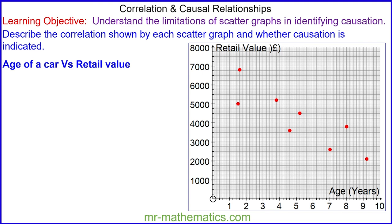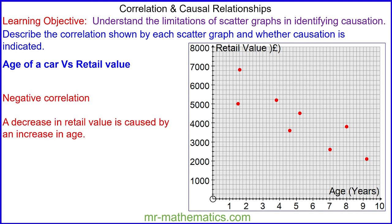And the final question. Can you describe the correlation shown by the scatter graph and explain whether causation is indicated? We have the age of car versus the retail value. Pause the video to answer the question and resume when you're ready. Okay, we can see a negative correlation because as the age of a car increases, its retail value decreases. And a decrease in retail value is caused by an increase in age.